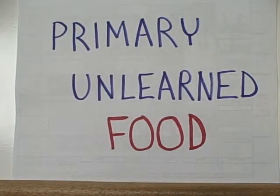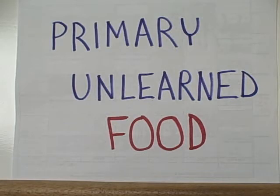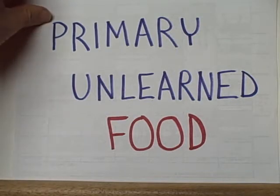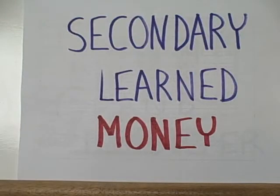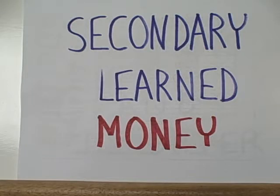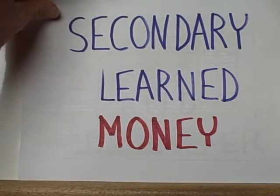Some reinforcers are primary — in other words, they are unlearned. The organism responds to that particular stimulus without any particular training; it just has to learn the connection between the stimulus and the response. Other kinds of reinforcers are learned in the sense that you've got to learn to appreciate the value of these things, such as money.